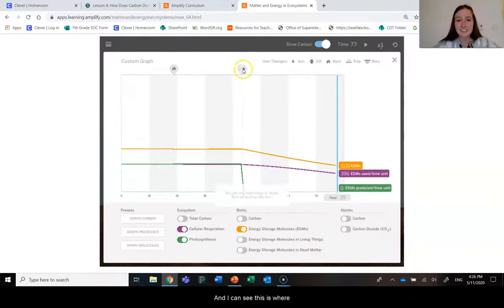And I can see this is where we turned our sunlight off, and I can see that photosynthesis is just absolutely plummeting. It's no longer occurring, whereas cellular respiration is staying pretty steady.